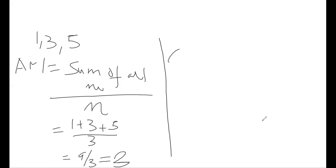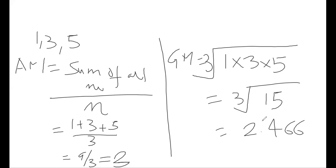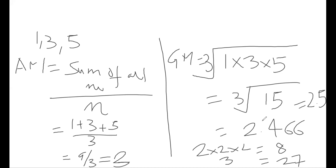In case of geometric mean, we multiply all the values — 1 multiplied by 3 multiplied by 5 — and then take the nth root, where n is the number of values. So we take the cube root of 15, which comes out to be around 2.466. As an estimation, cube root of 8 is 2 and cube root of 27 is 3, so 15 falls between them, giving approximately 2.5.